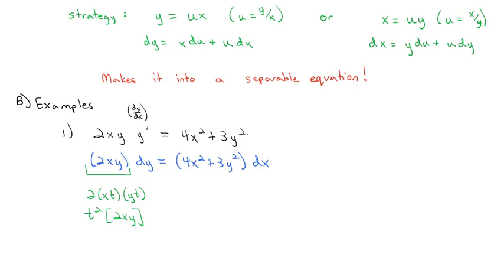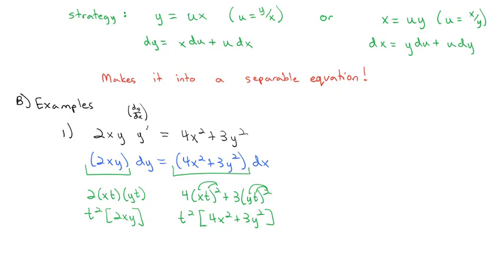Now checking the other side: 4x² becomes 4(xt)² and 3y² becomes 3(yt)². Squaring into the parentheses gives t² on both terms. Factoring out t² leaves 4x² + 3y², which matches the original function with t² out front. Because both sides factor out t² and leave the original functions, we can conclude this is a homogeneous equation.